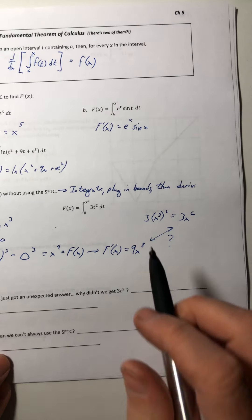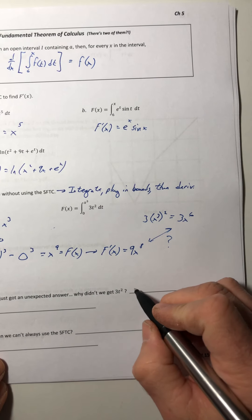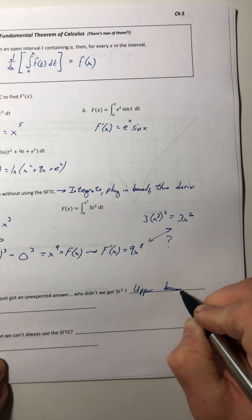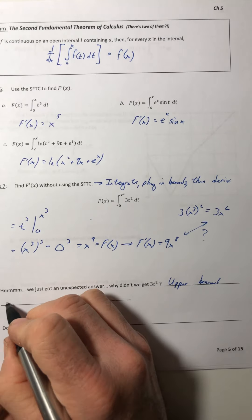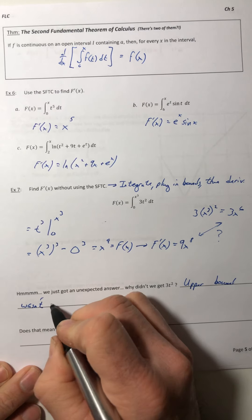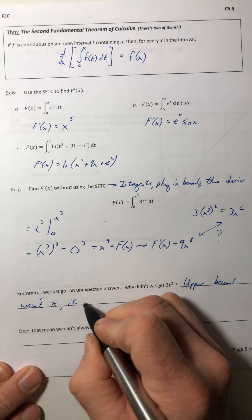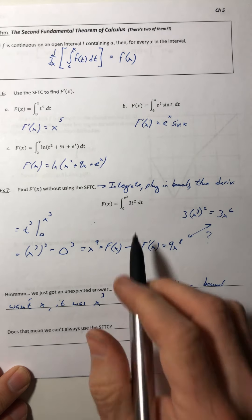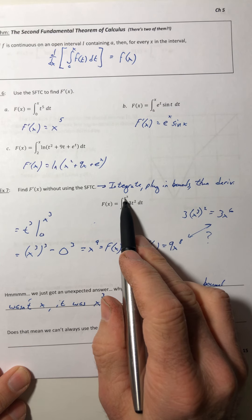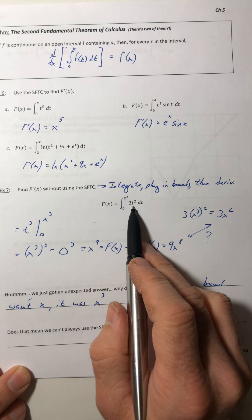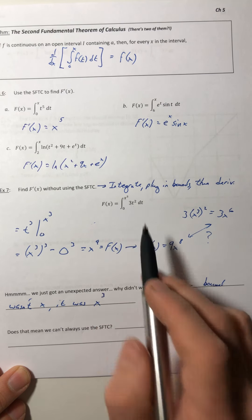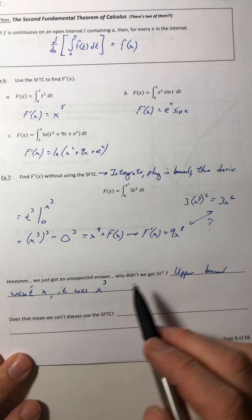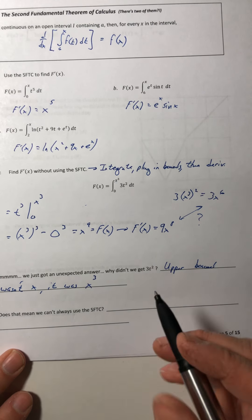Well, for two reasons. One, the upper bound wasn't x, it was x to the third. So you can't just take the variable itself and plug it in for t. You got to take the entire upper bound and stick it in there. So does that mean you can't use the theorem? You still can.